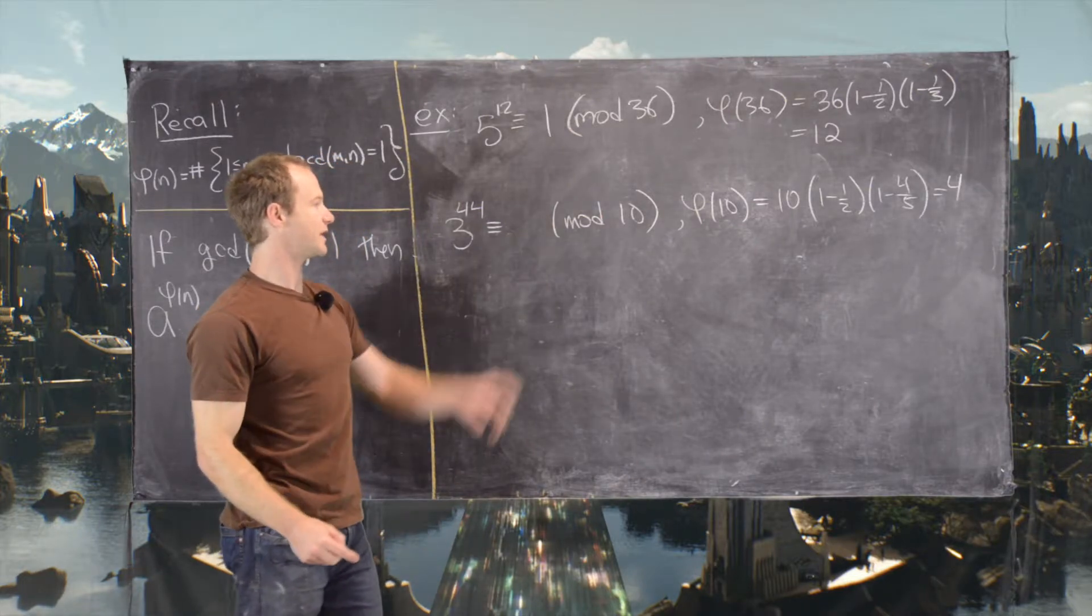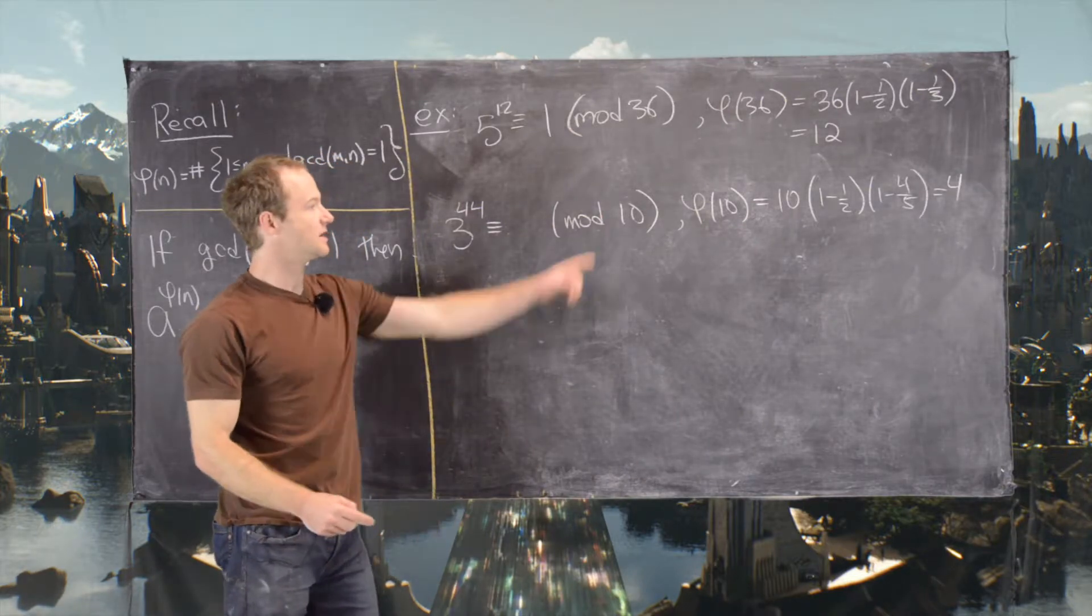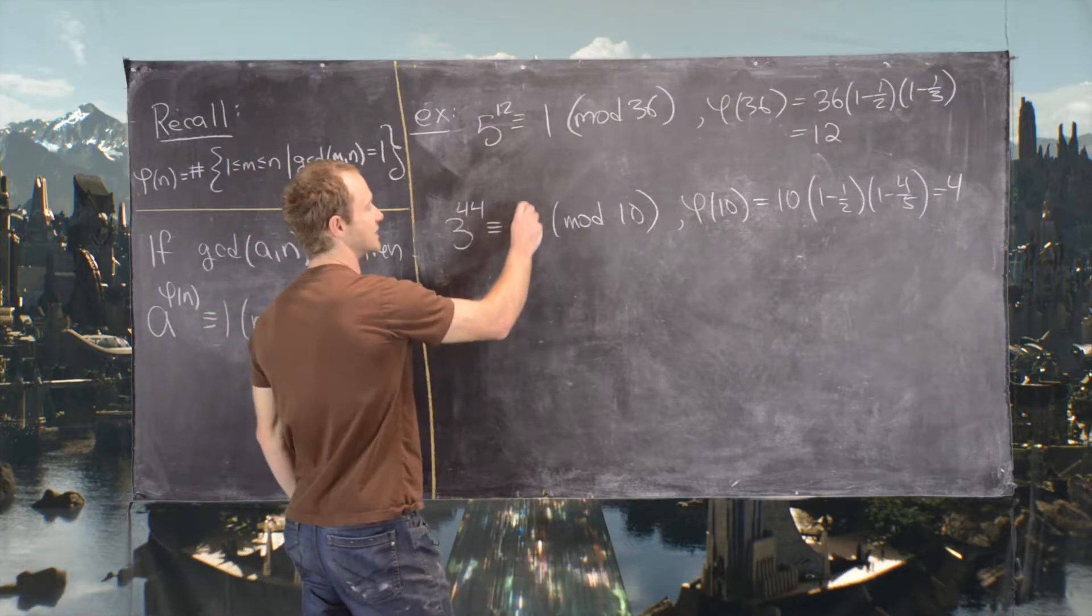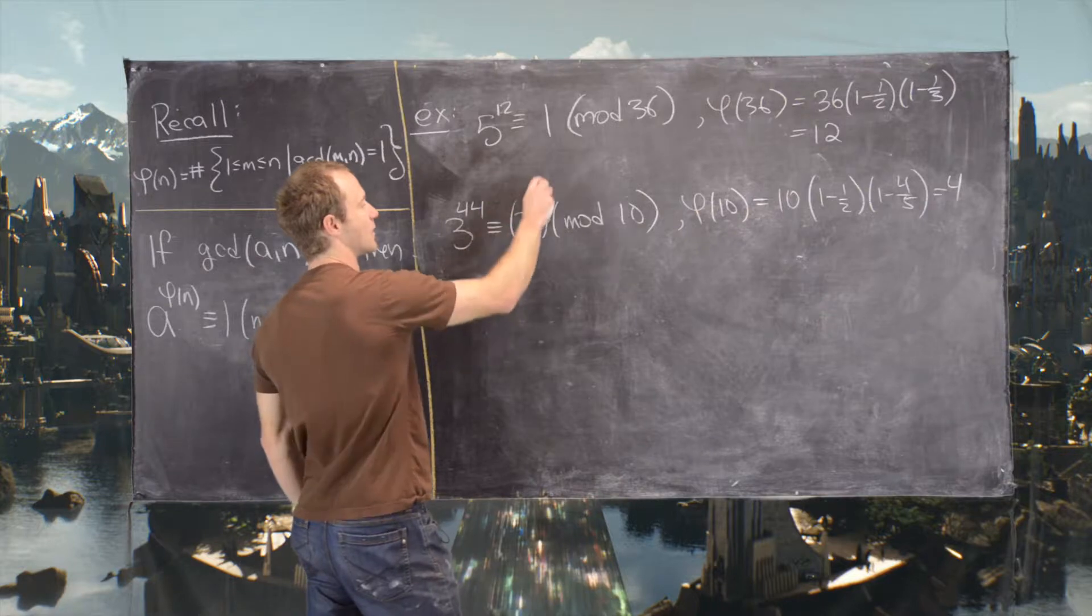Now we probably want to do this in a couple of steps. Since this is 4, this is 44. So maybe the best strategy here is to write this as 3 to the 4 to the 11.